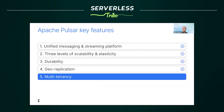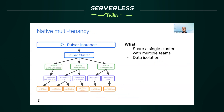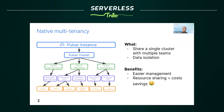Another very cool feature of Pulsar is multi-tenancy. Multi-tenancy allows different departments or teams within an organization to share a Pulsar cluster while keeping their data isolated. It provides security, structure, and resource isolation in a shared environment. Benefits include easier management — you only need to operate one single cluster for multiple teams — and significant reduction in infrastructure nodes, saving costs. This is not a hack or an additional layer on top of Pulsar. Pulsar is designed for multi-tenancy — it's a built-in feature.